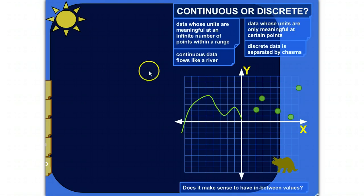Continuous data is data whose units are meaningful at an infinite number of points within a range. Or as I say, continuous data flows like a river. If you were to visualize it, it would be like this. Between any two points here, there's an infinite number of points on the graph. We call it infinitely divisible.